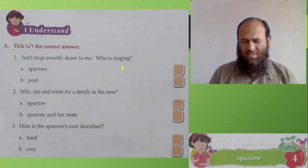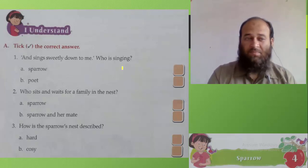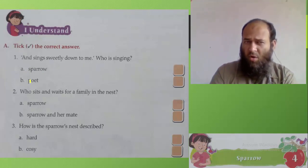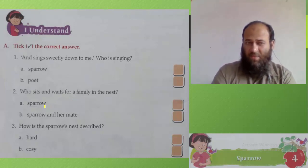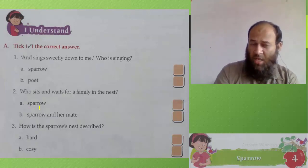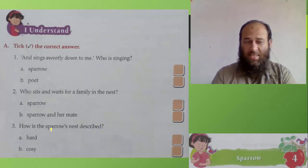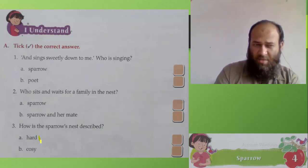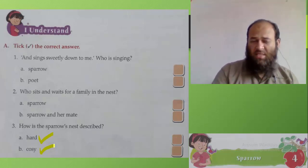This is a simple exercise. I want you to find the answers — I'm not going to tell you the answers this time. 'And sings sweetly down to me' — who is singing, the sparrow or the poet? Tick the correct answer. Who sits and waits for a family in the nest — was it the sparrow alone, or the sparrow and her mate? Tick the right answer. How is the sparrow's nest described — is it something hard, something cozy, or very hot? Tick the right answer.